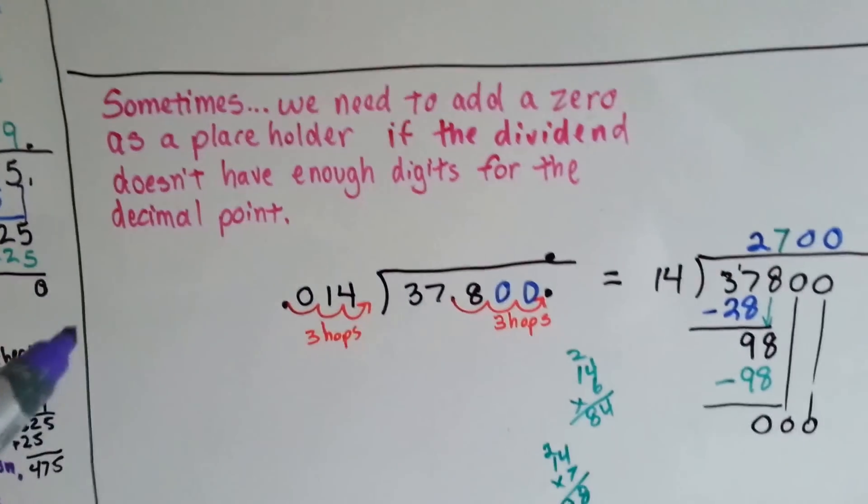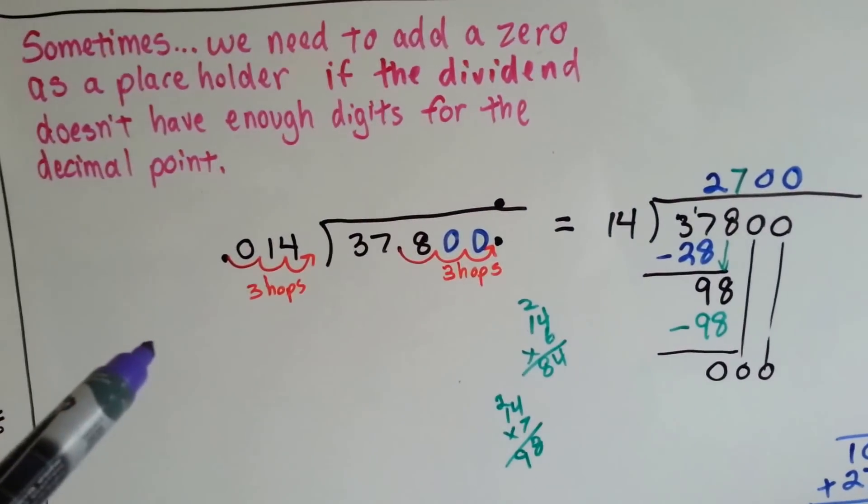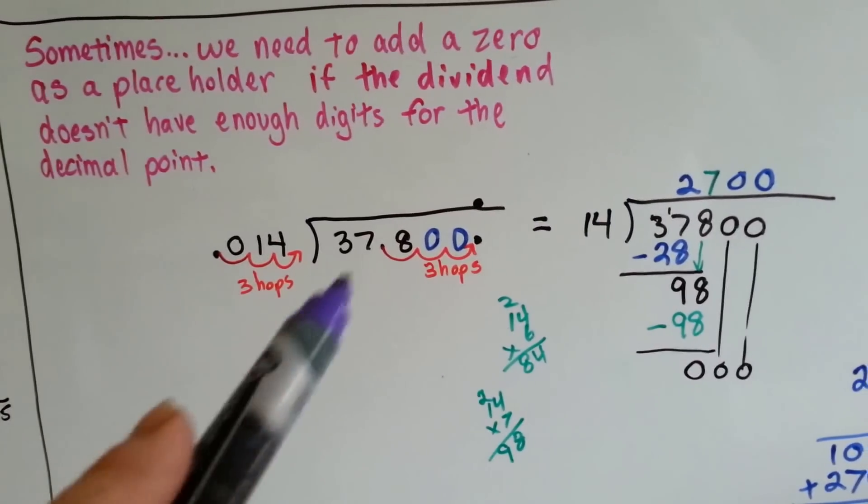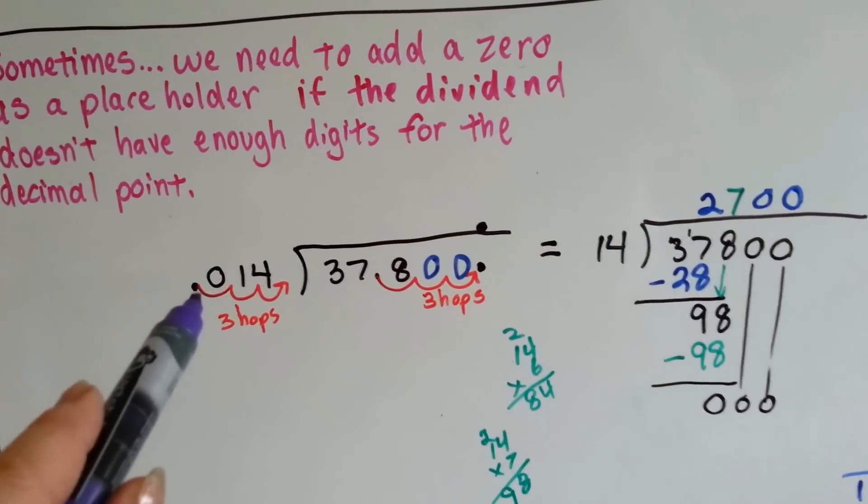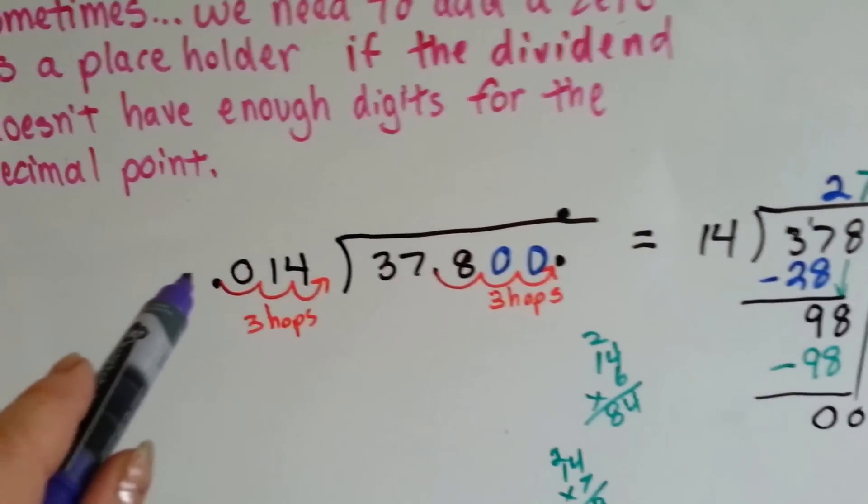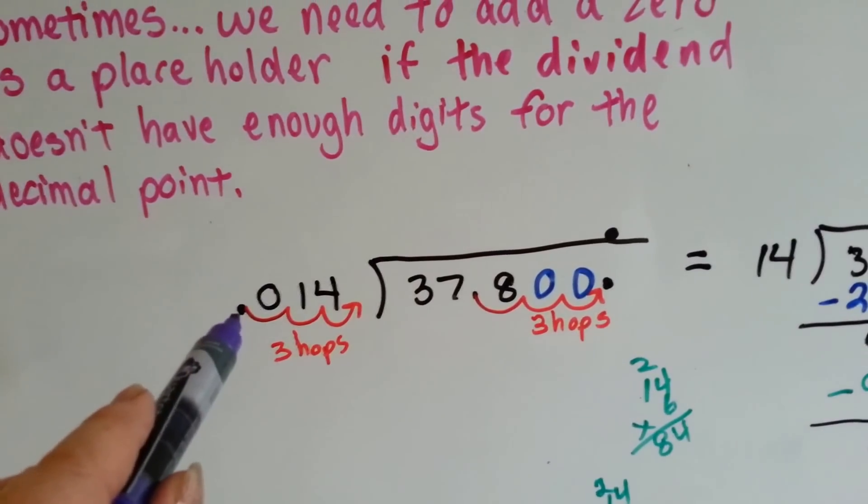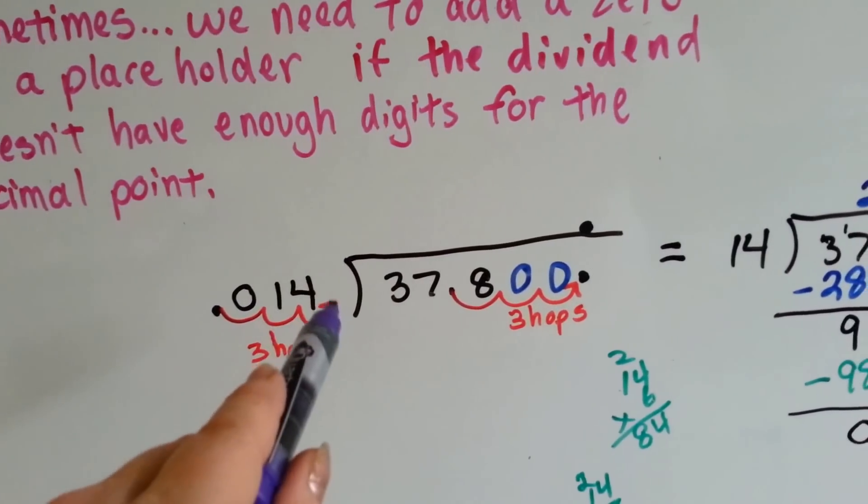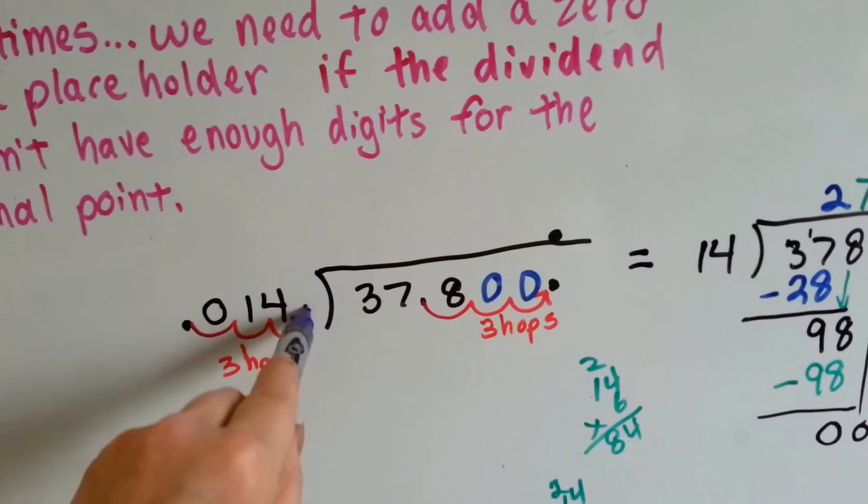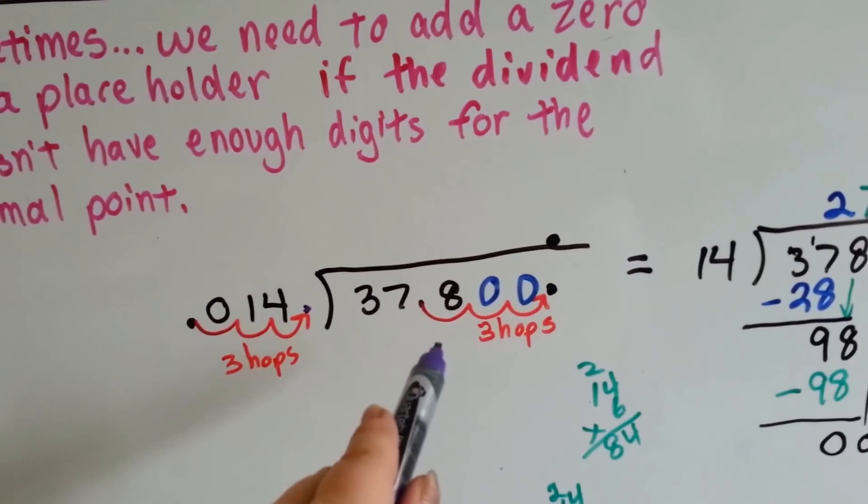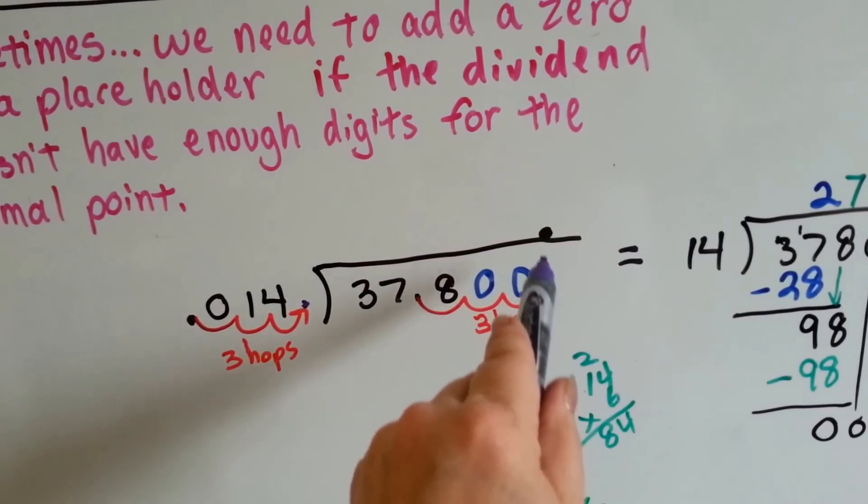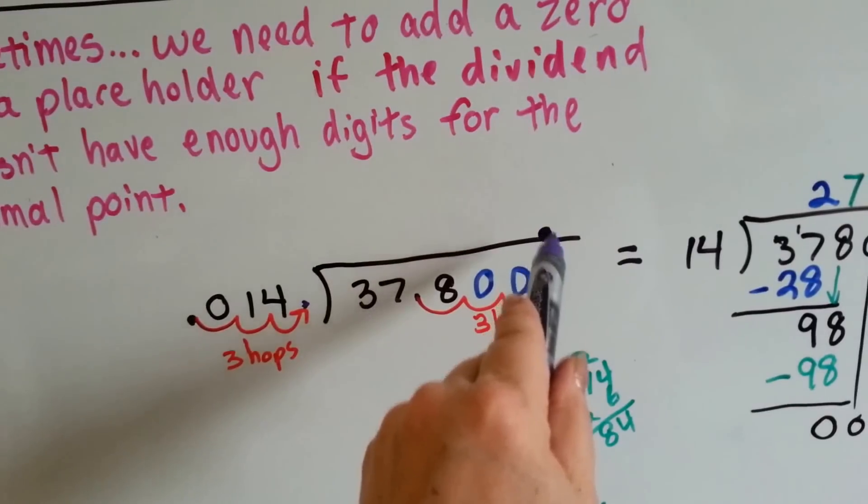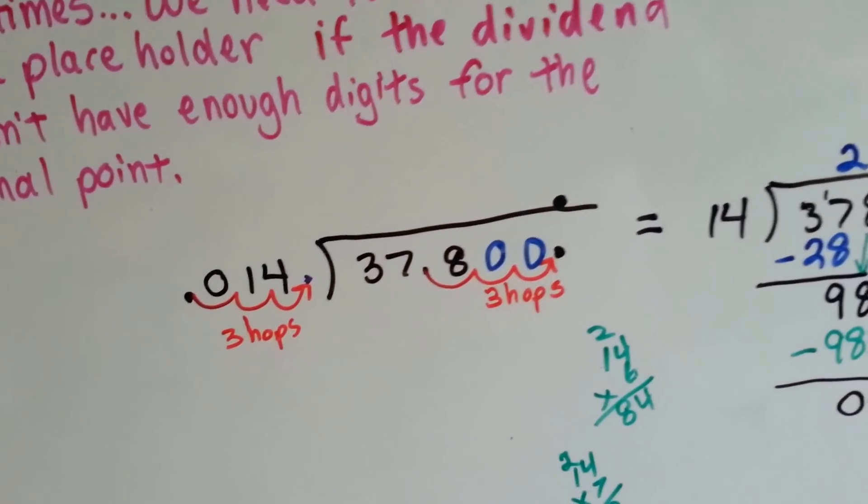As I said in the beginning, sometimes we need to add a zero as a placeholder. If the dividend doesn't have enough digits for the decimal point, if we're dividing and our divisor is 14 thousandths, we need to move it three hops to get it back here, the decimal point. So we're going to have to move it in the dividend three hops. And by doing that, the decimal point is going to go directly above here for the quotient, but we needed to put zeros in to hold those places.